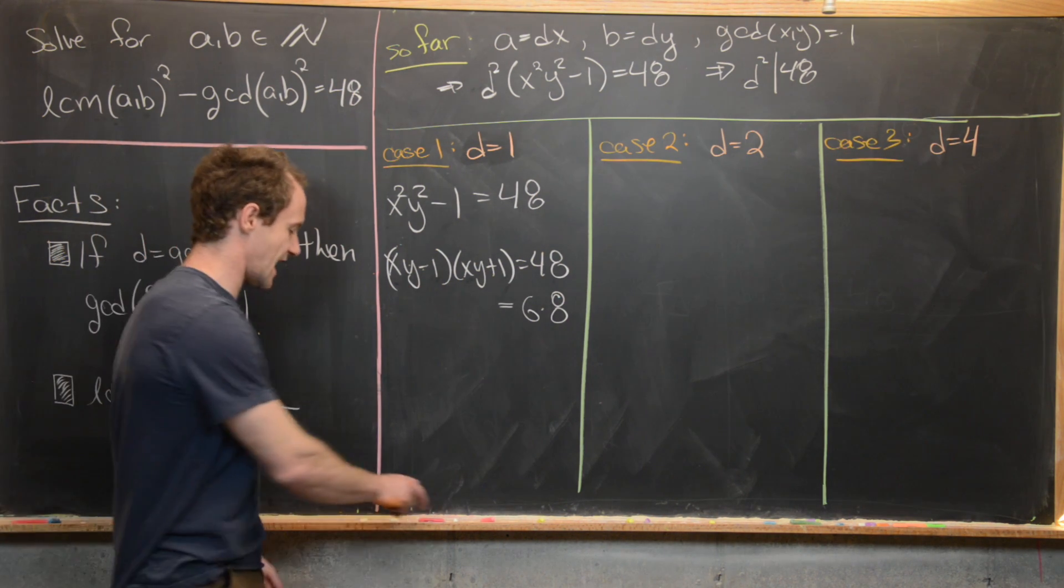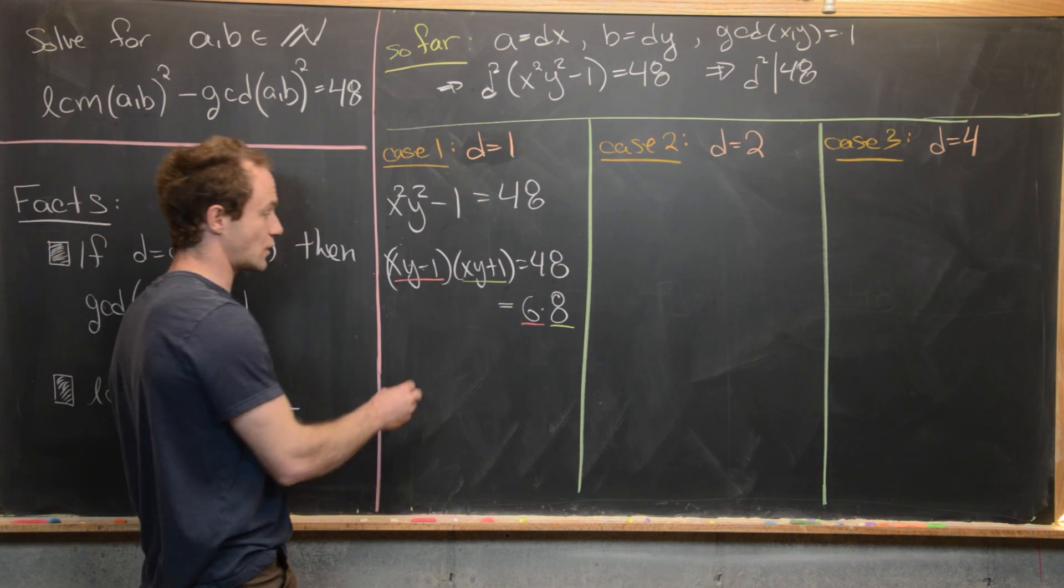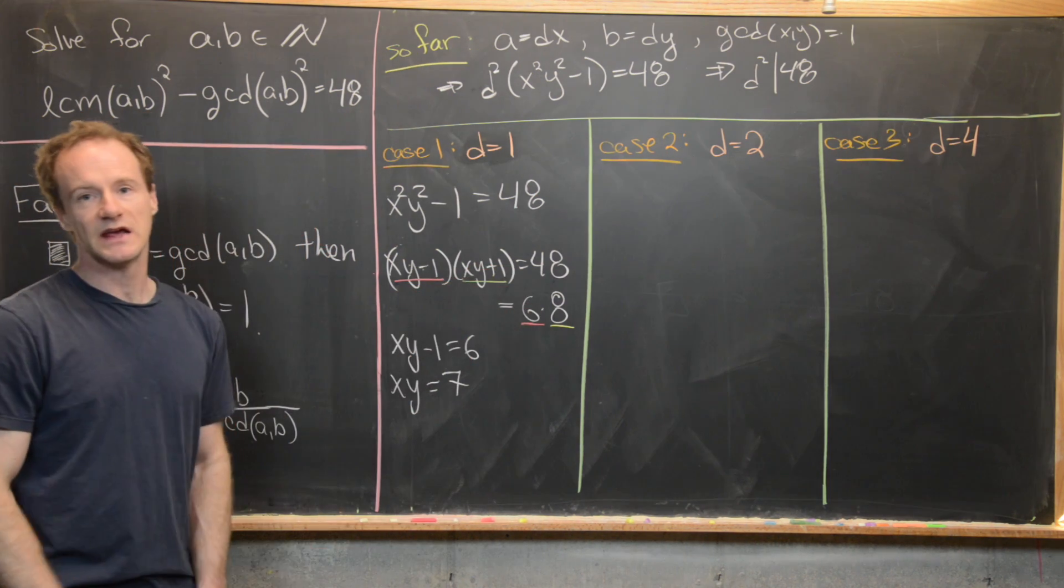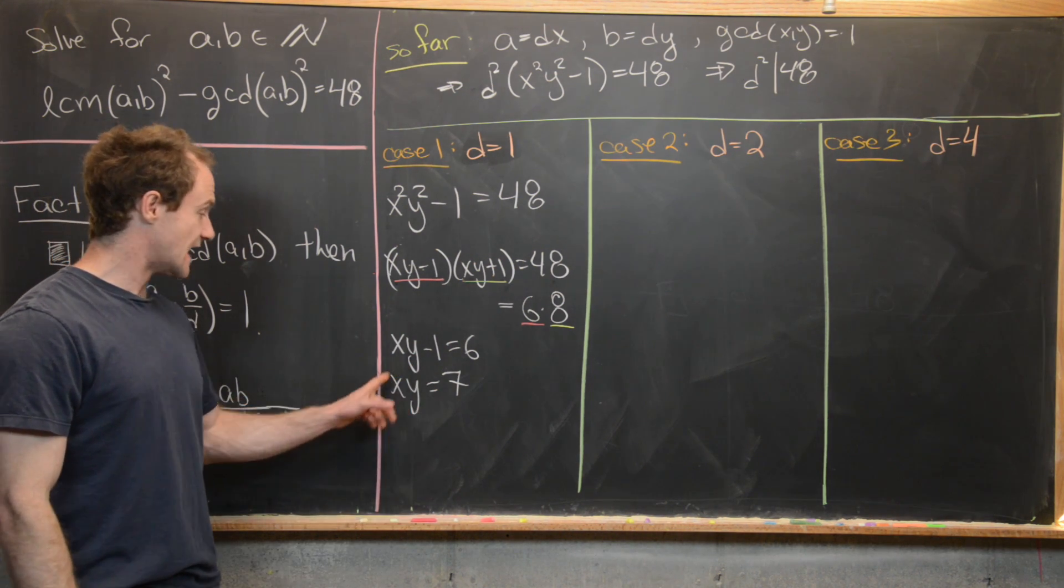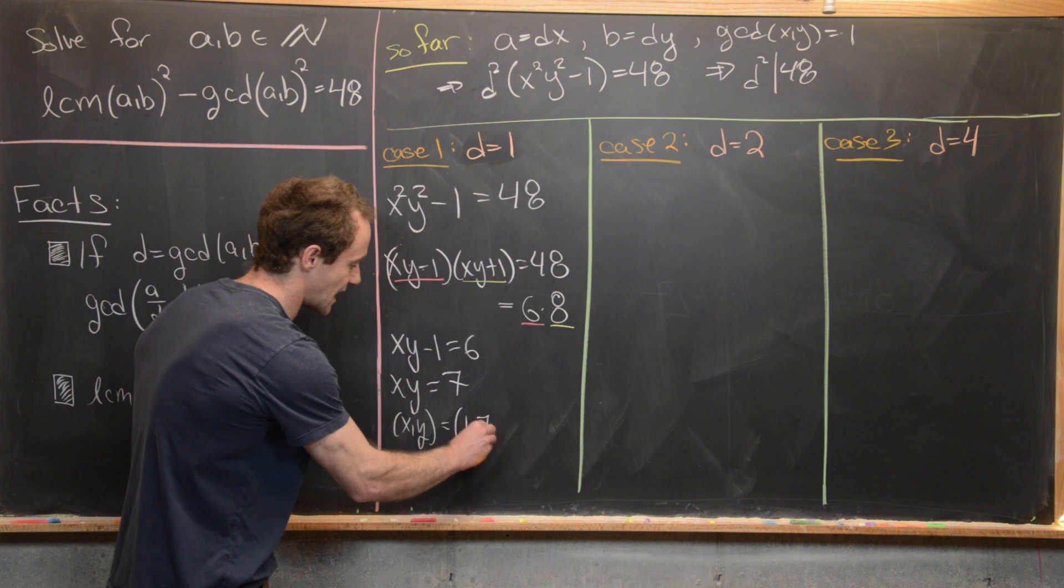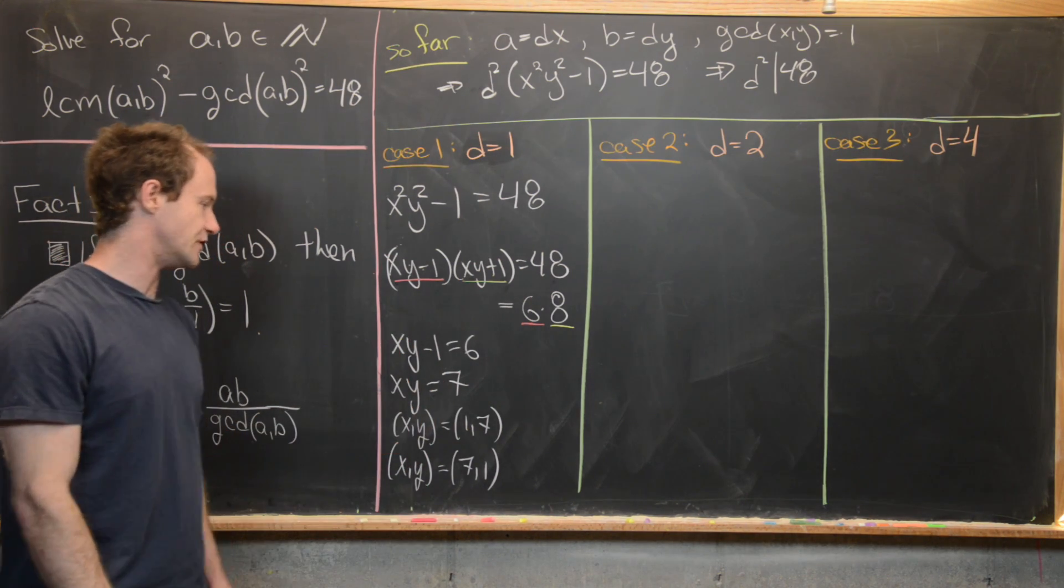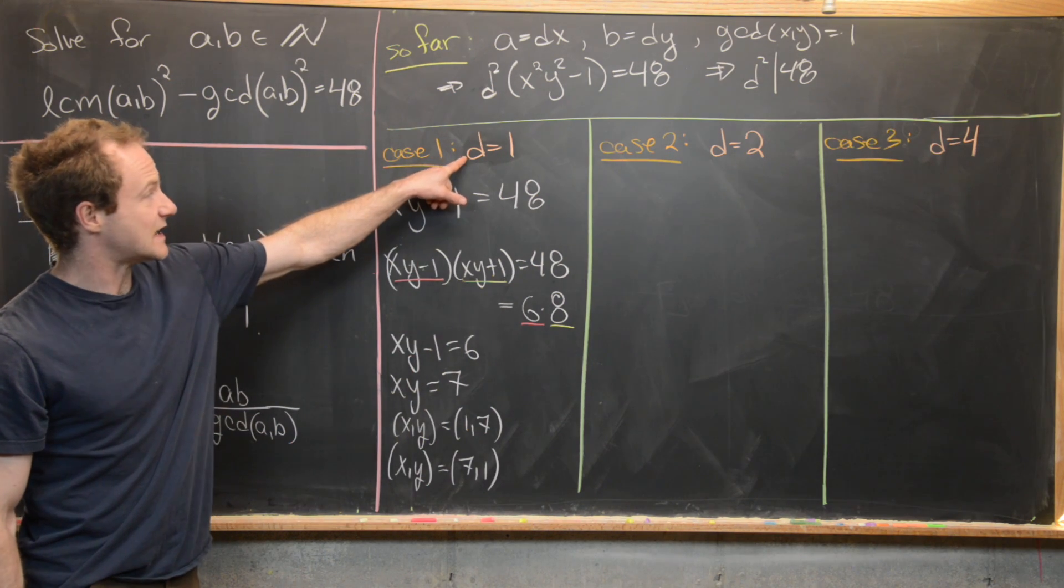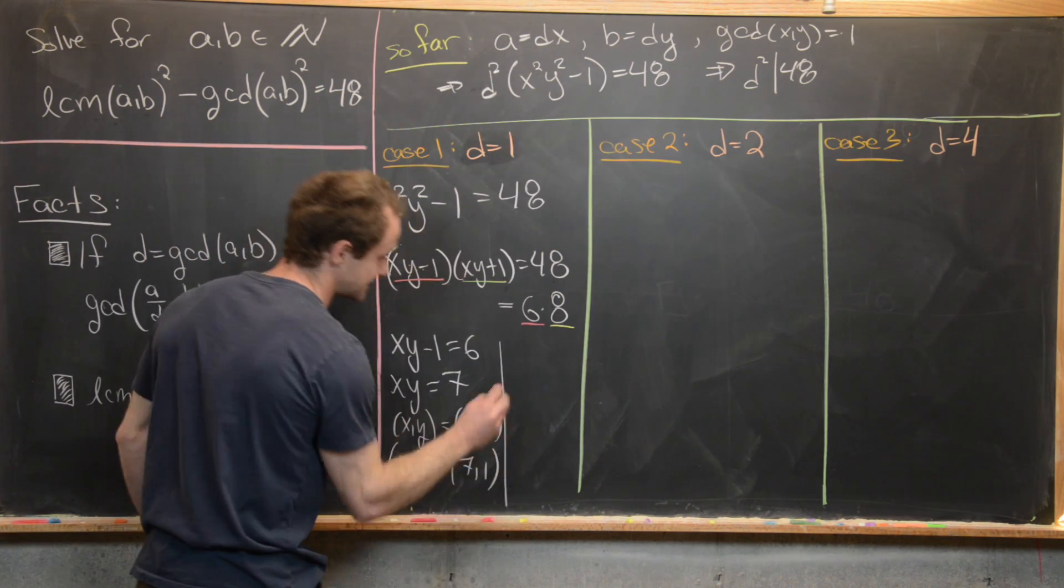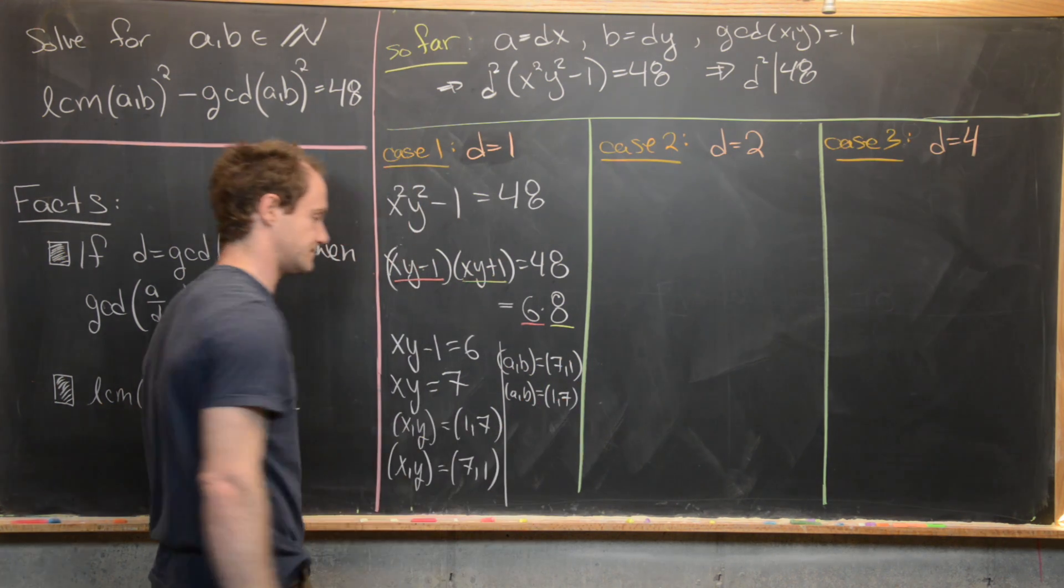But now which one is the 6 and which one is the 8? But that's pretty obvious here because this is the smaller one. So it has to be 6. And then this X, Y plus 1 is the larger one. So it has to be 8. So that gives us this equation, which is X, Y minus 1 equals 6, which clearly gives us X times Y equals 7. And notice X, Y plus 1 equaling 8 will give us the same kind of thing. But now since X and Y are natural numbers, this gives us only two pairs of solutions. We have X, Y equals 1, 7 or X, Y equals 7, 1. Because 7 is a prime number, so that's the only way that you can factor this. But now since D was equal to 1, the GCD of A and B, that means that A is just equal to X and B is just equal to Y. So that gives us our final solution of A, B equals 7, 1 or A, B equals 1, 7.